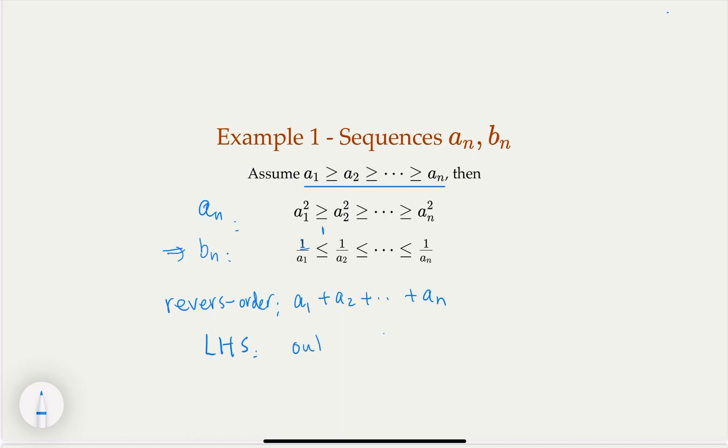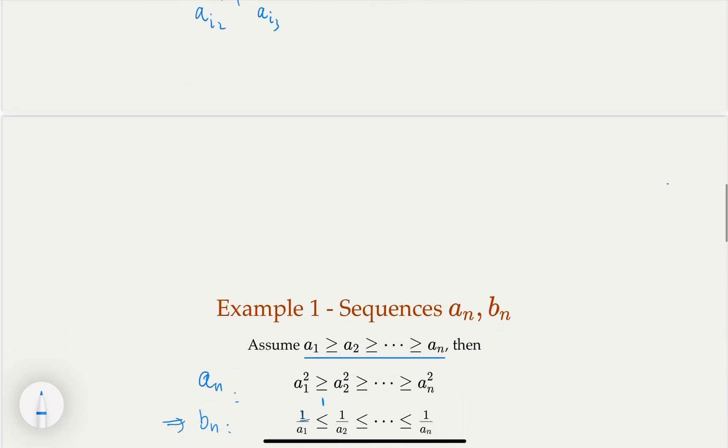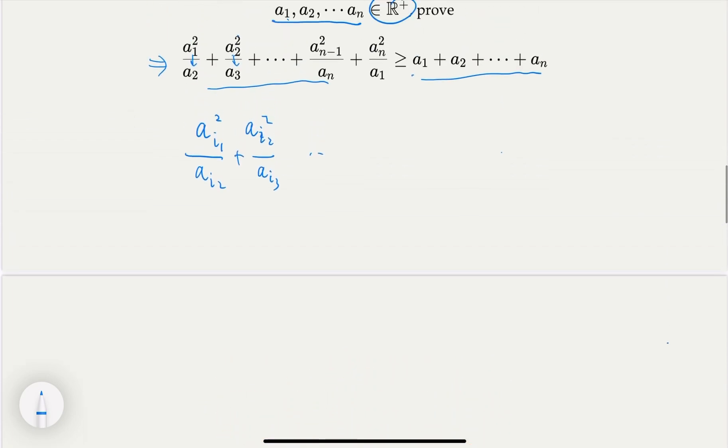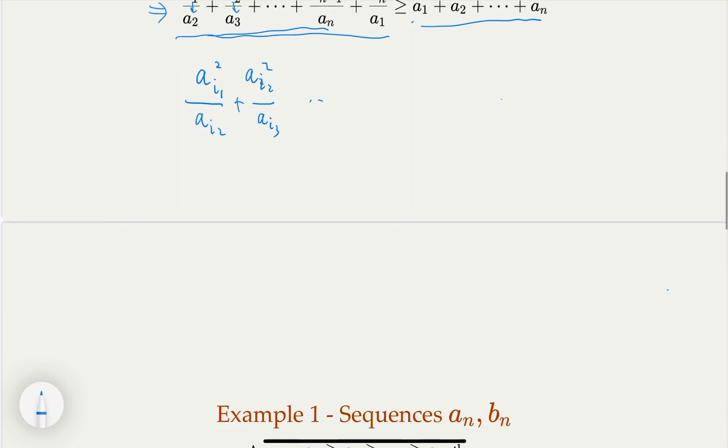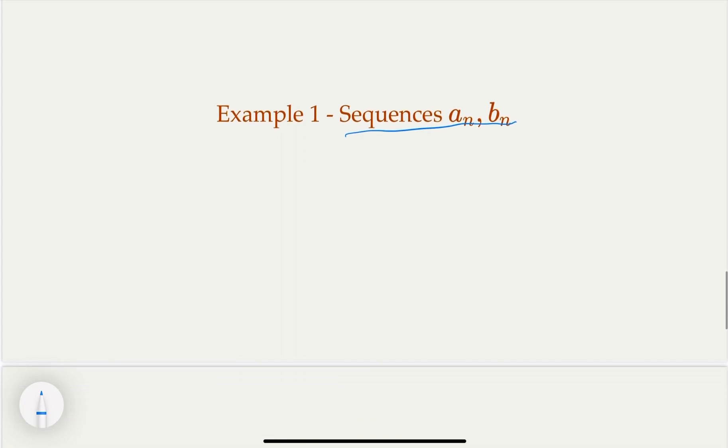And so out-of-order is greater or equal to the reverse order, which is a_1 + a_2 + a_n. So that's the proof. The thinking here, the fact that we can claim this, I think it is a very common trick in the proof. But you need to understand why we can do that. And why, if you do that, the left-hand side becomes an out-of-order case. So this is the way to think the a_n and b_n.